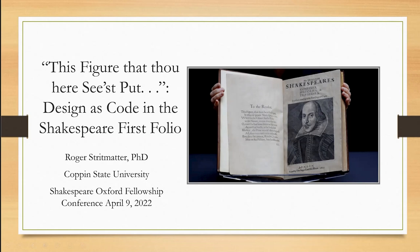My title, 'This Figure That Thou Here Seest Put: Design as Code in the Shakespeare First Folio,' is of course drawn from the first line of Ben Johnson's epigram prefixed to the 1623 First Folio, about which Catherine Children and Michael Delahoyd have already given us so much to consider. My title is aspirational, and my aspiration is not to convince you of any particular decoding, but rather to revisit the question of post-Stratfordian or Oxfordian approach to the concepts of design and code, and their sometimes beautiful relationship in early modern semiotics.